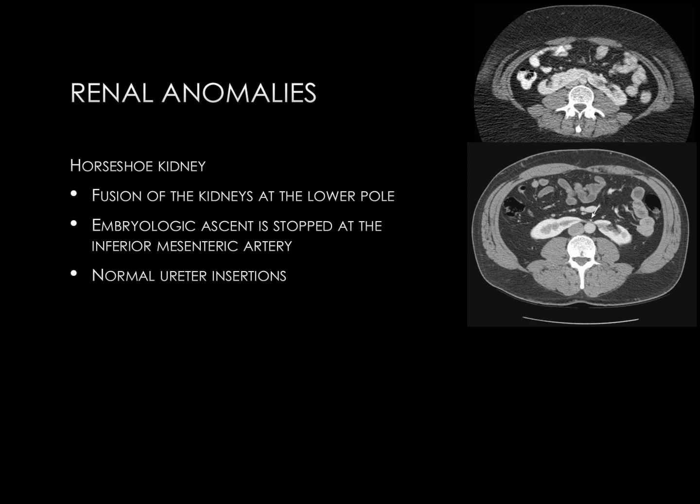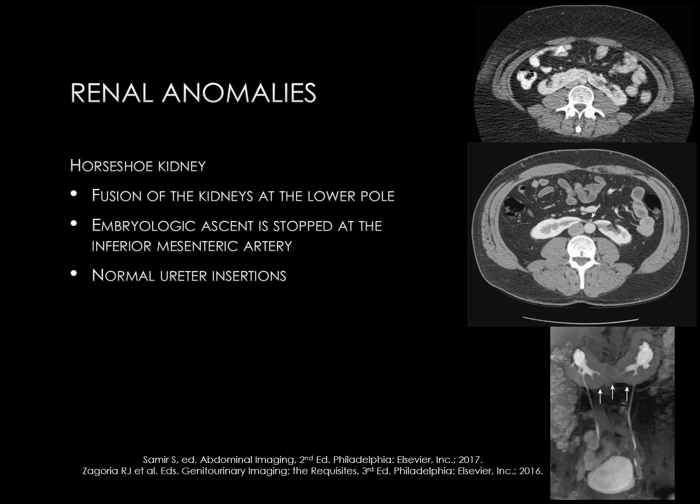Horseshoe kidney has normal ureteral insertions at the bladder. The right lower image is an excretory phase of an MR urogram, so contrast is within the renal collecting systems, ureters, and bladder. You can see that the lower pole of the renal parenchyma is fused in the midline, and the ureters are positioned in a normal location, both inserting at their respective portions of the bladder.